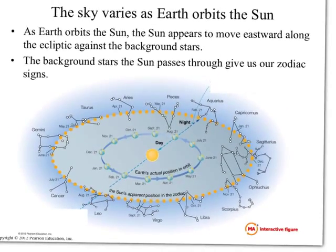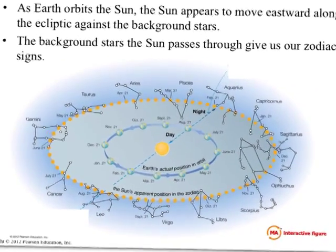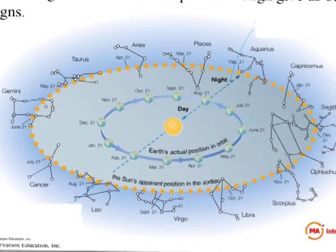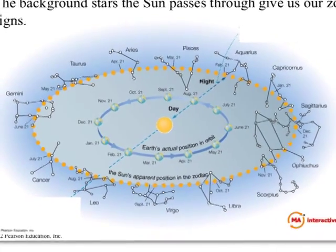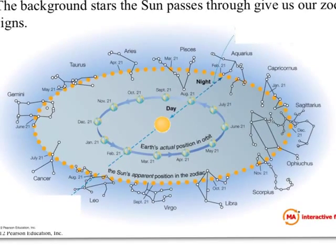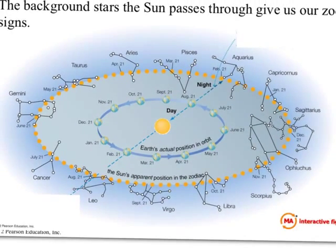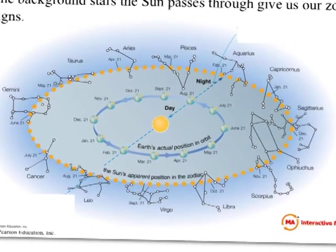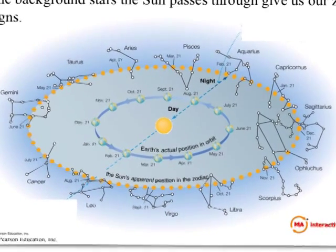We really know that the sun, because of its gravity, is influencing the motion of the planets. So the planets are orbiting the sun.